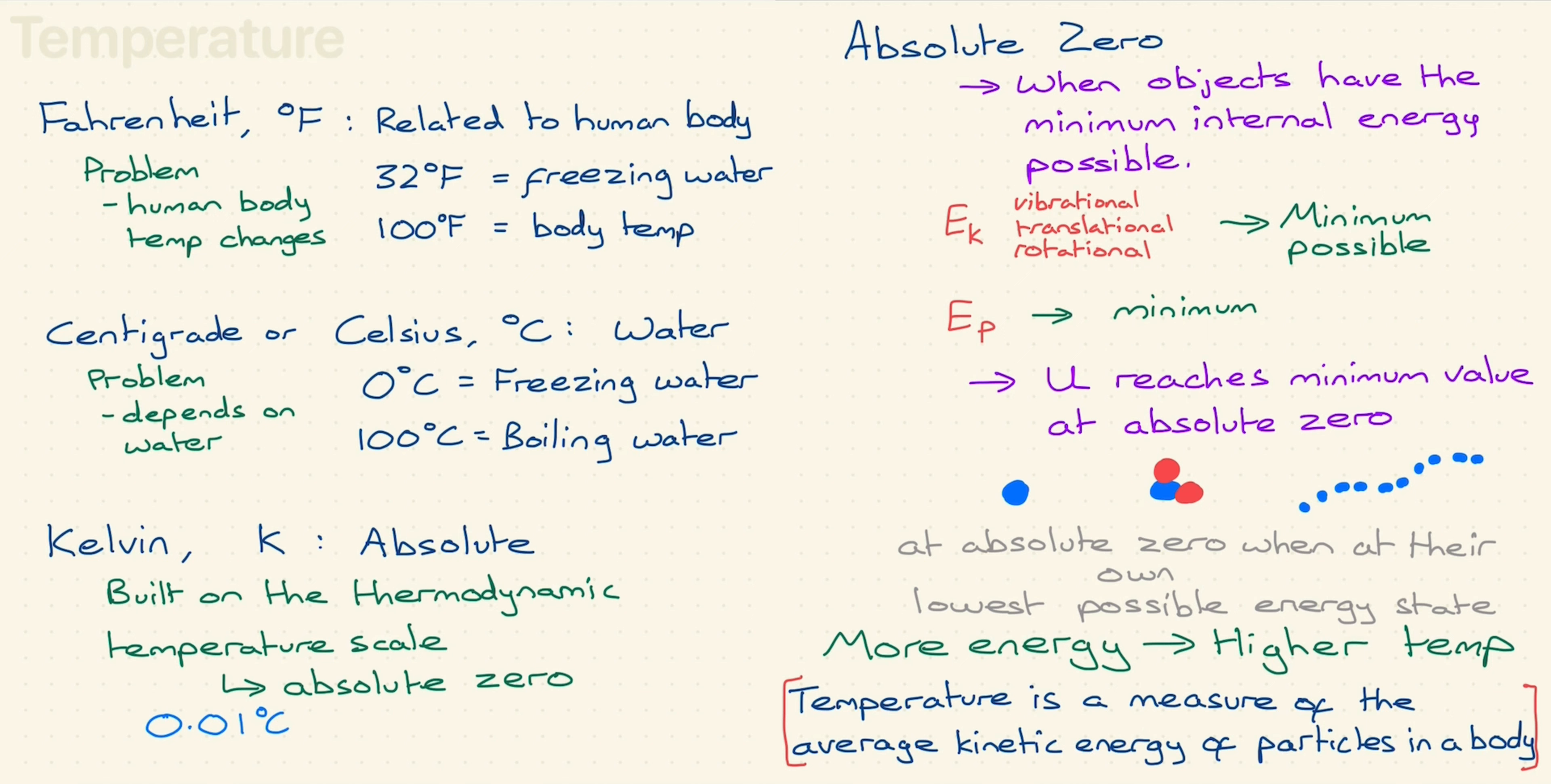For convenience, since everyone was already using degrees C, the upper fixed point was defined as being exactly 273.16 Kelvin. This is slightly above the melting point of water in one atmosphere of pressure, which is 273.15 Kelvin.